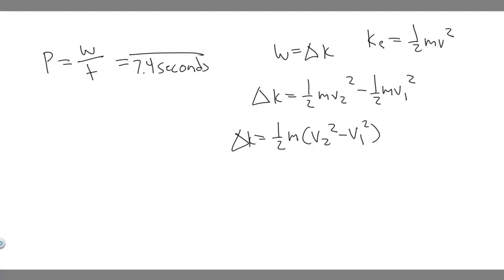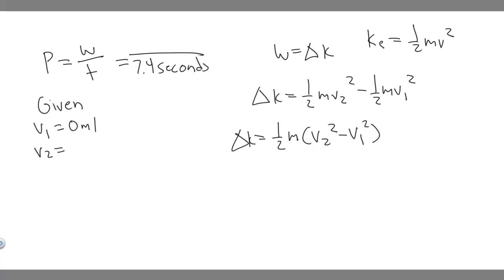Let's go ahead and solve this. First, let's find the velocities: v₁ is the velocity at the beginning and v₂ is the velocity at the end. They tell us we start from rest, so v₁ equals 0 meters per second. For v₂, they give us 95 kilometers per hour, but we need to convert that to meters per second.